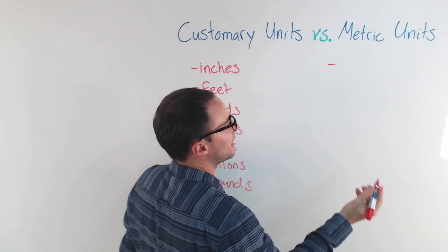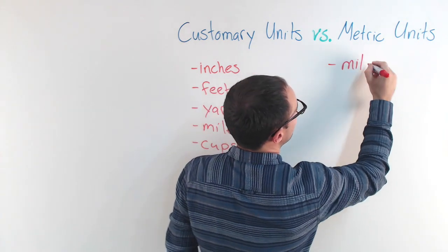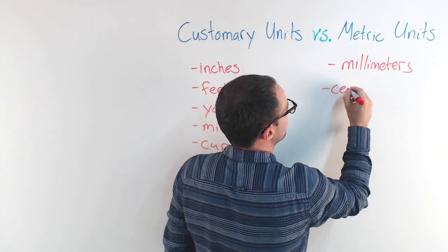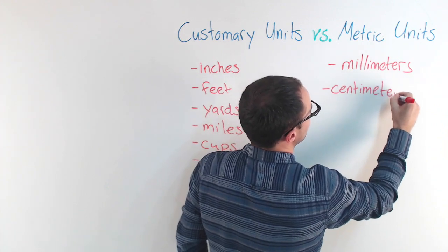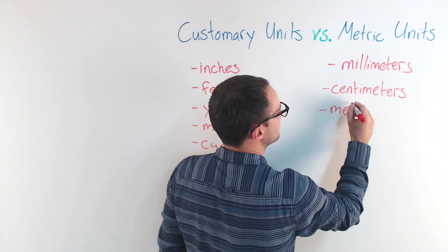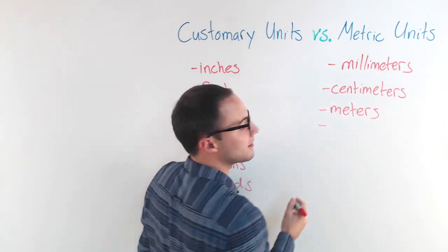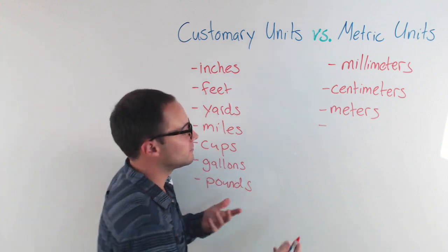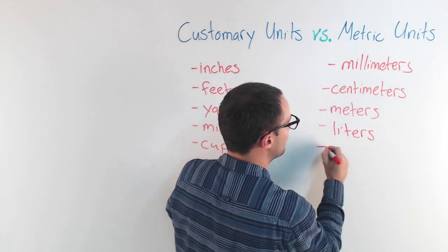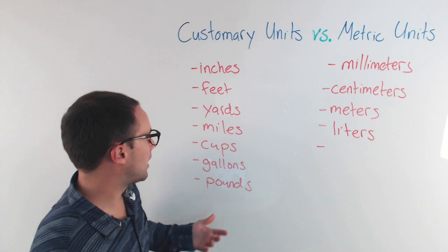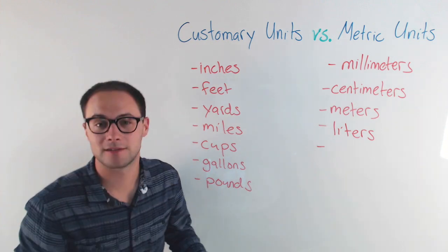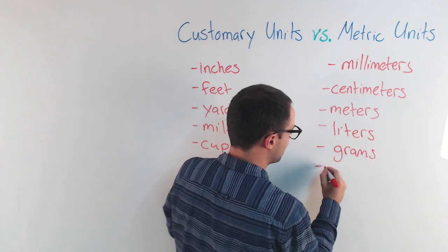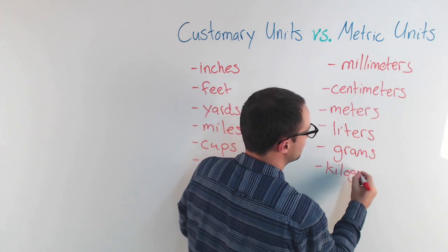So you've got things like millimeters, or centimeters. Obviously meters, kilometers. You've got things like for volume instead of cups and gallons, you've got liters or milliliters. For weight, instead of things like pounds, you've got grams or kilograms.